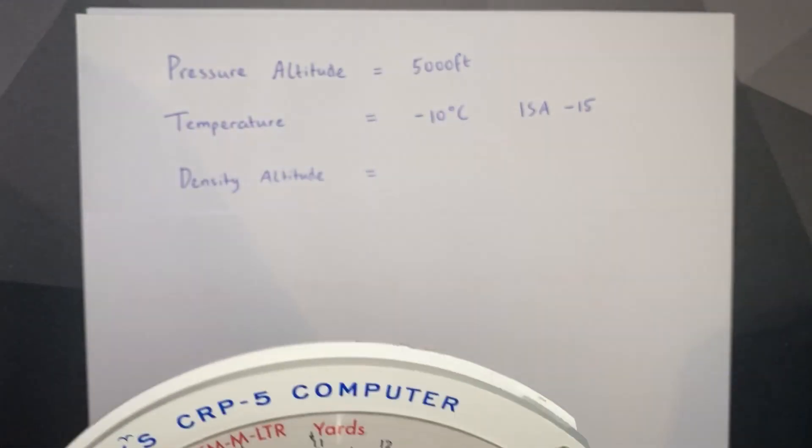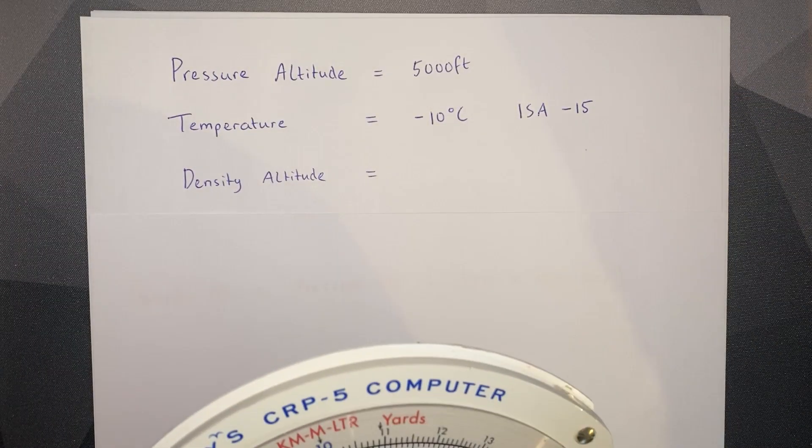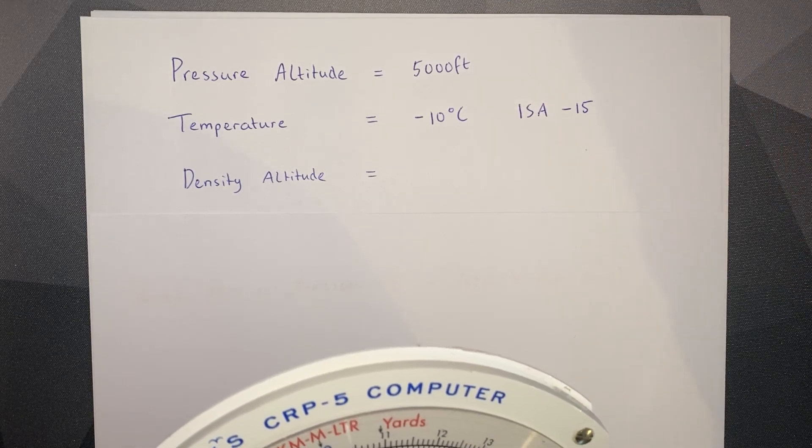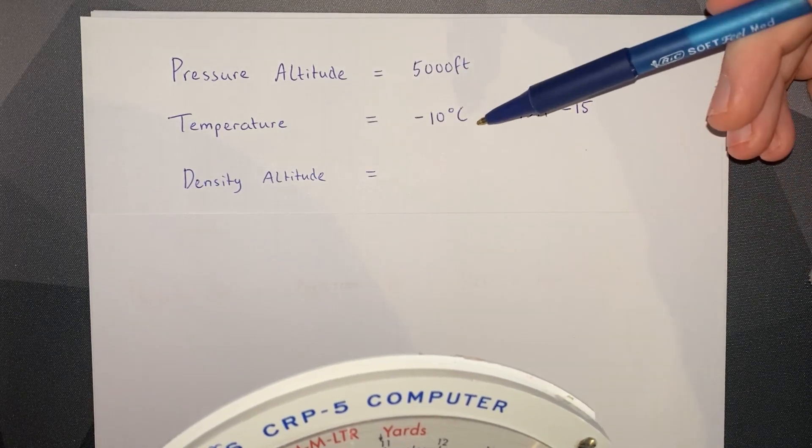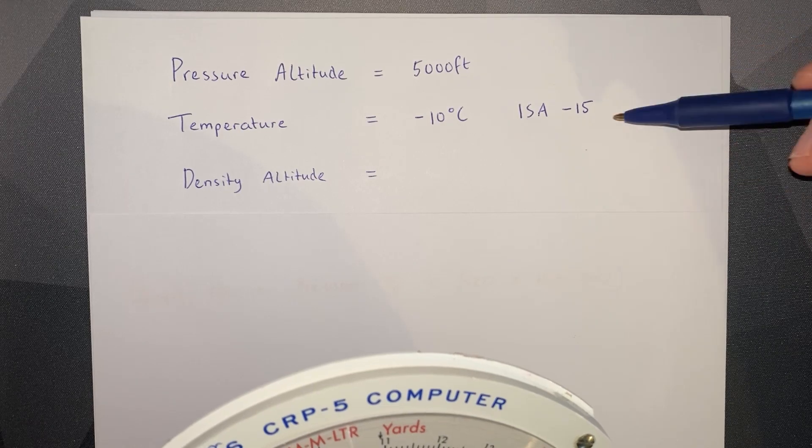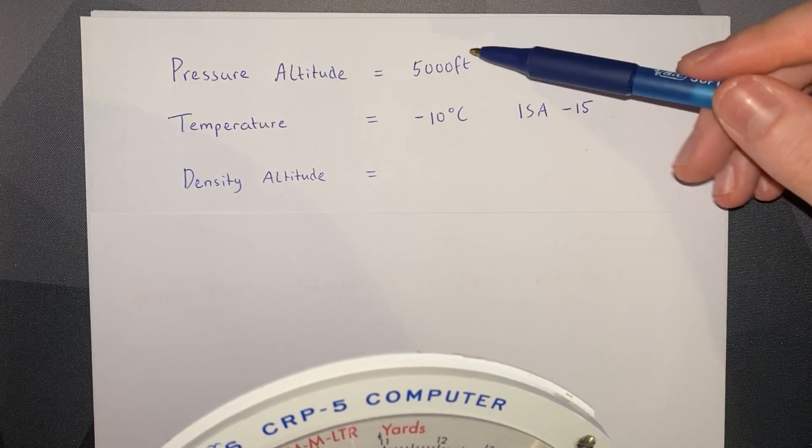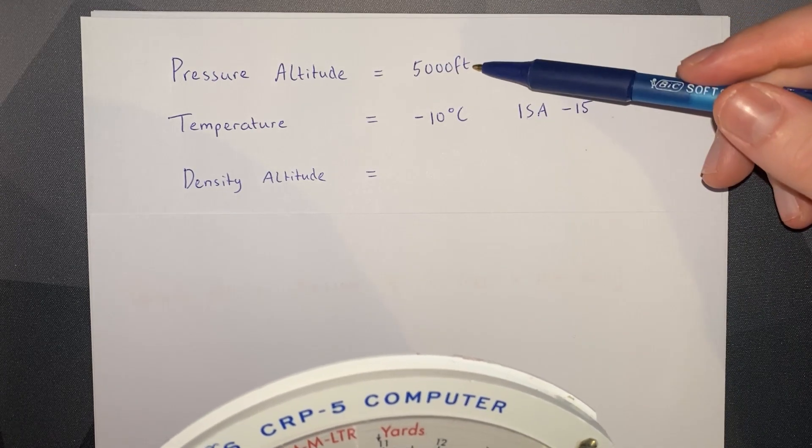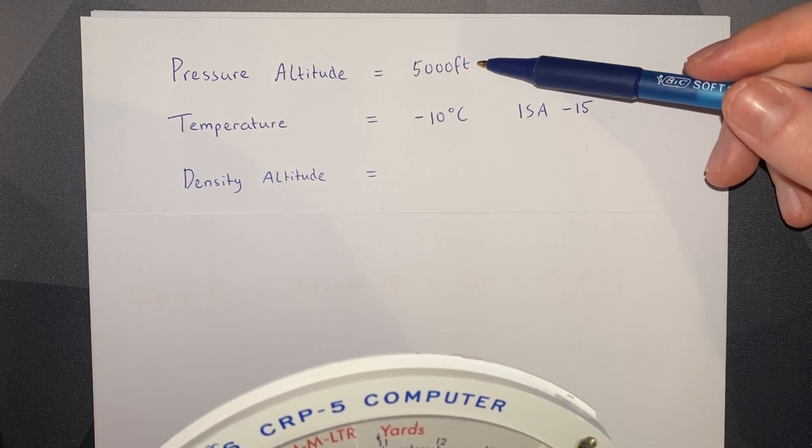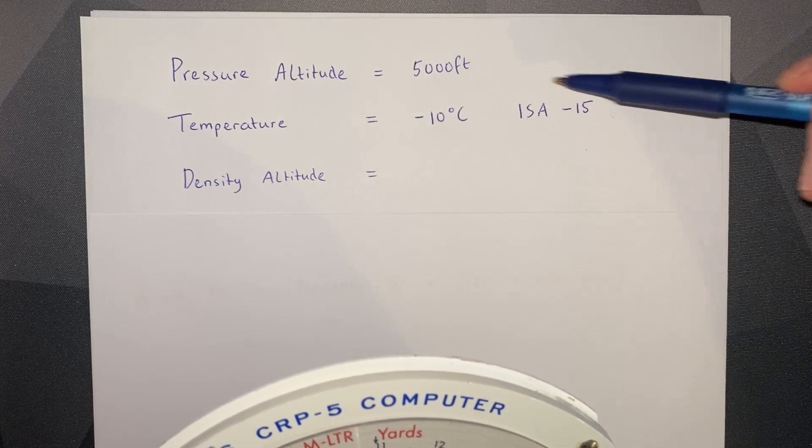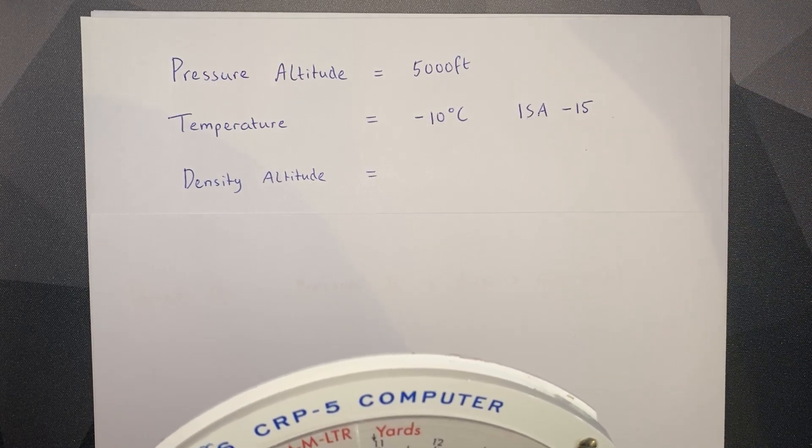Let's dive straight in with an example. We're given a pressure altitude of 5,000 feet and a temperature of minus 10 degrees, which is ISA minus 15. In the international standard atmosphere at 5,000 feet, we would expect the temperature to be plus 5 degrees Celsius, but we're given minus 10, so that's where the ISA minus 15 comes from.